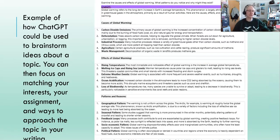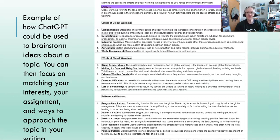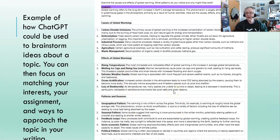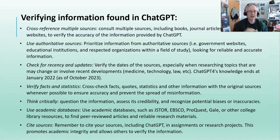Here's an example of brainstorming using ChatGPT 4. You can use it to give a broad outline — in this case I asked it to examine the causes and effects of global warming, adding a follow-up: 'What patterns do you notice and why might they exist?' It starts with a short definition, then breaks down causes, effects, and patterns, following the structure of my question. I can then read through and say — I live in an ocean community, so melting ice caps and rising sea levels could be something I'm very interested in. Keep that in mind; we're going to come back to it later.